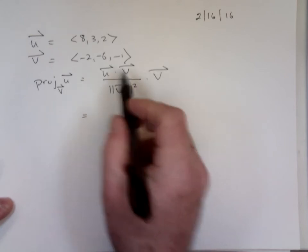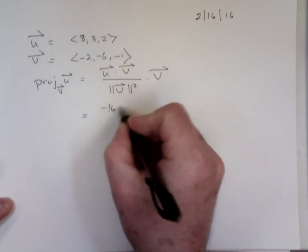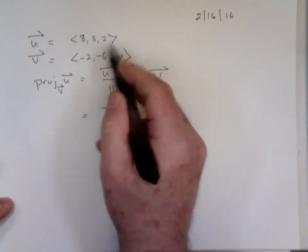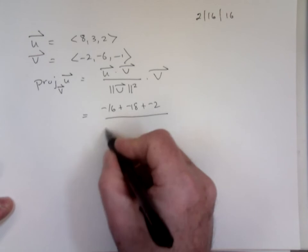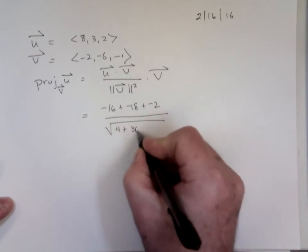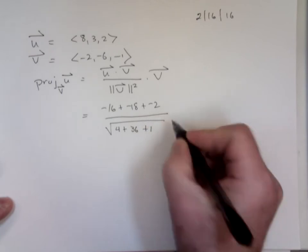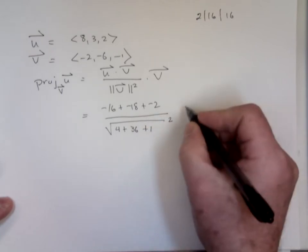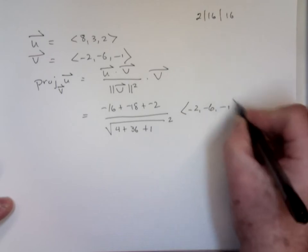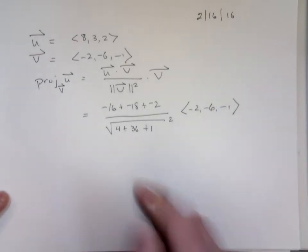So, dot product: negative 16 plus negative 18 plus negative 2, sum of the products. Magnitude of V, square root of 4 plus 36 plus 1, squared, times V: negative 2, negative 6, negative 1.